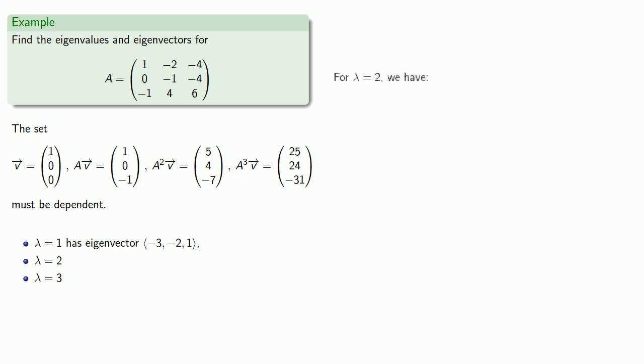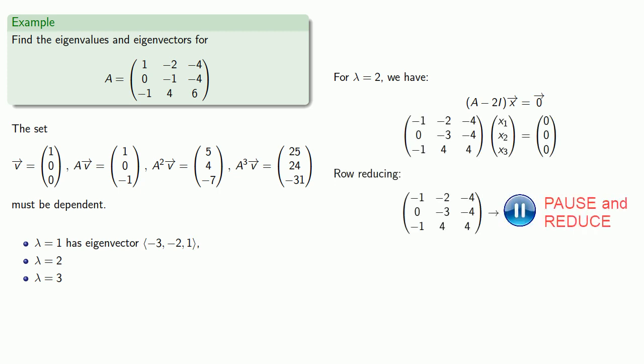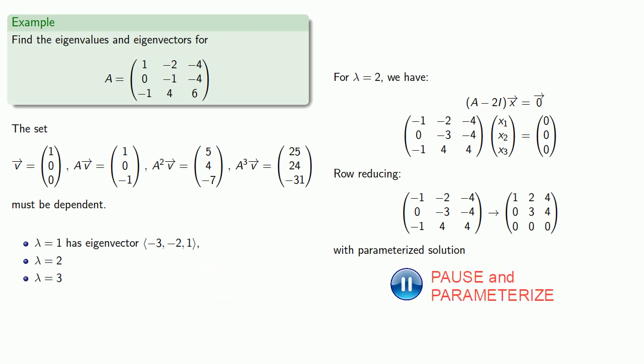For lambda equals 2, we have row-reducing, parameterizing our solutions, and if t equals 1, we get the eigenvector.